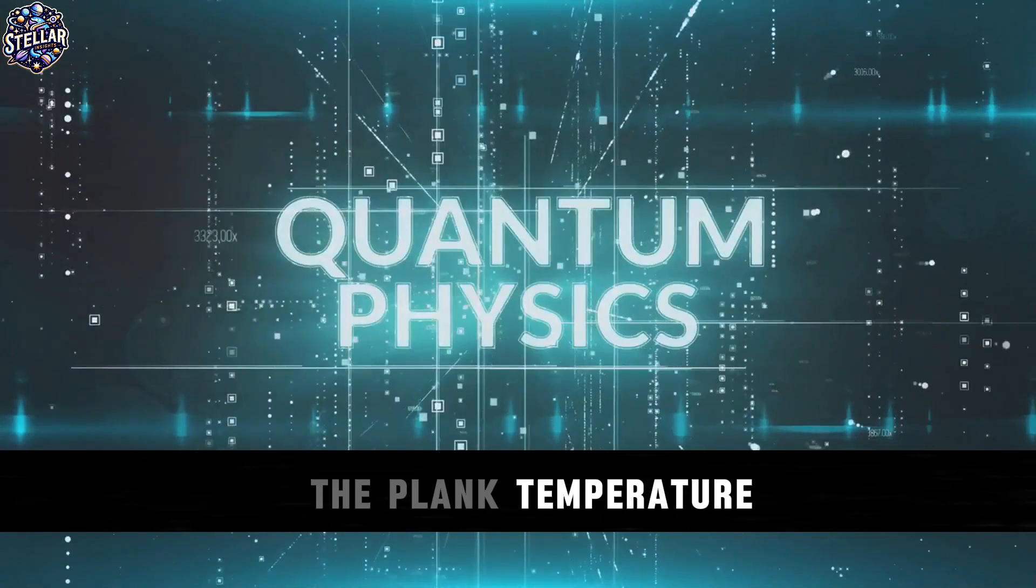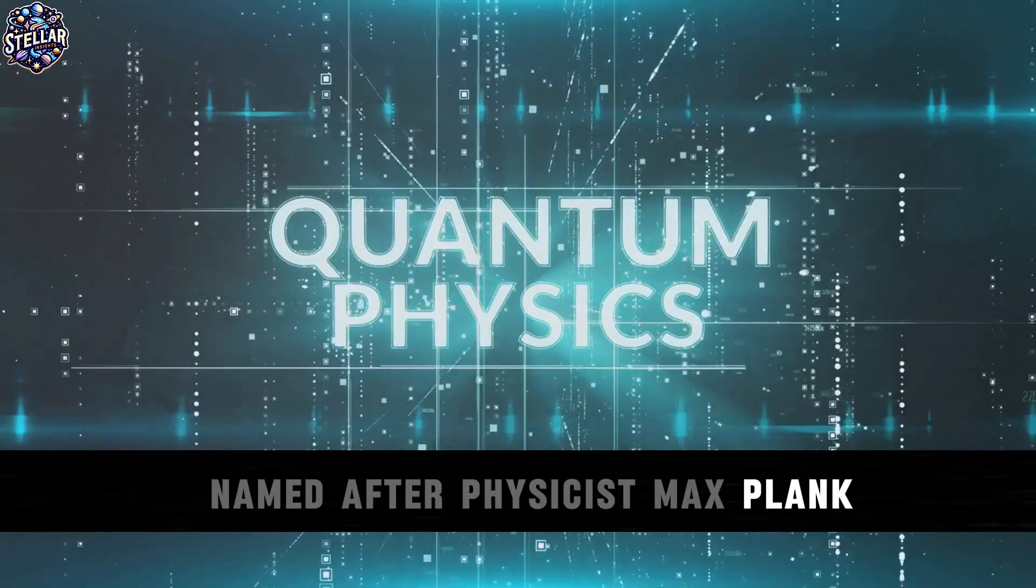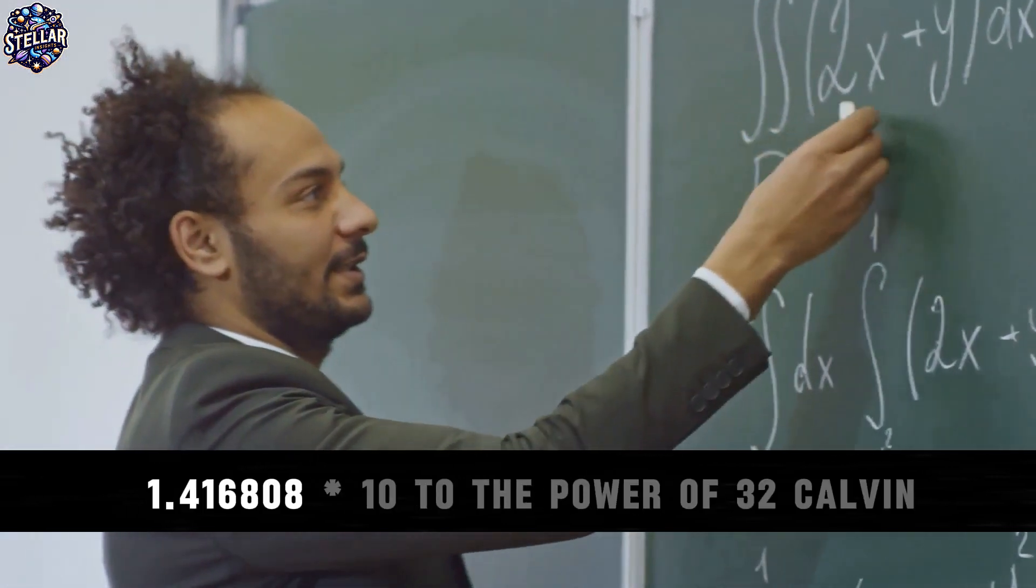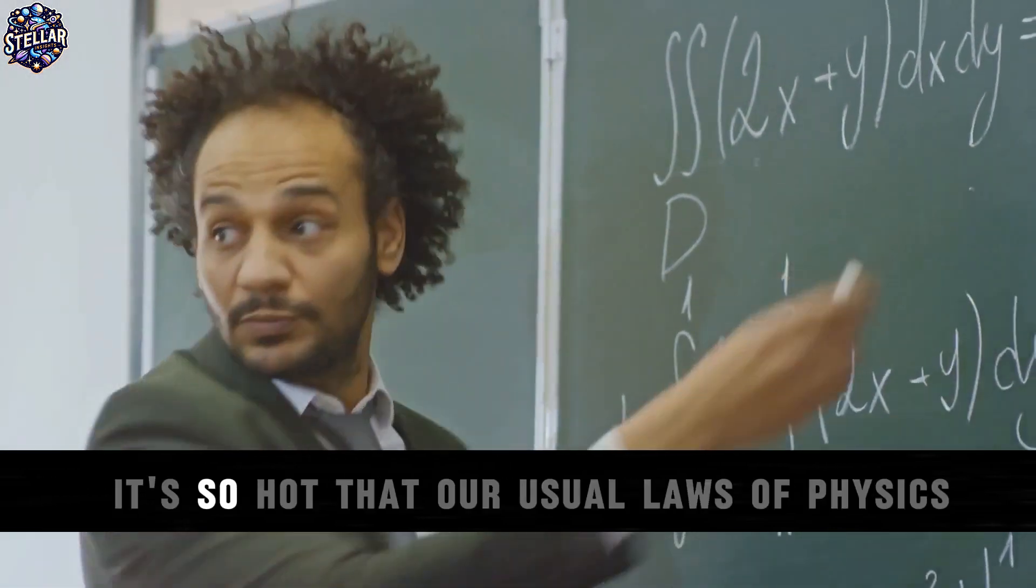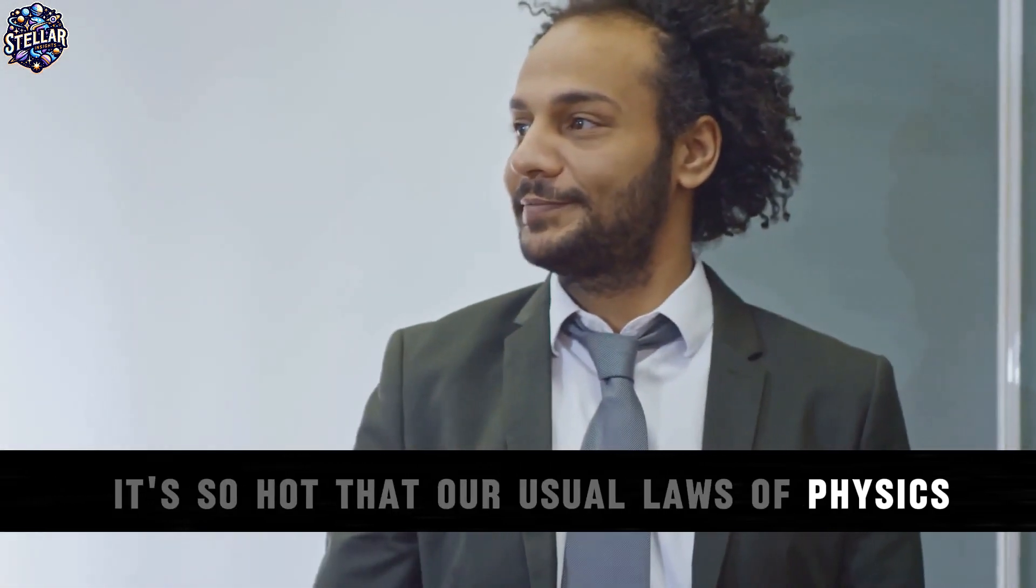The Planck temperature, named after physicist Max Planck, is a mind-boggling 1.416808 times 10 to the power of 32 Kelvin. It's so hot that our usual laws of physics simply do not apply.